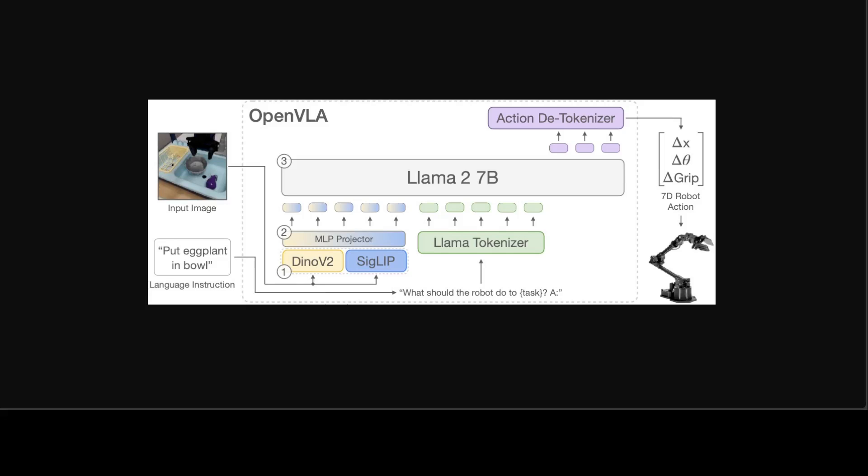The key weakness of learned policies for robotic manipulation is their inability to generalize beyond training data. While existing policies trained for individual skills or language instructions can extrapolate to new initial conditions such as object positions or lighting, they lack robustness to scene distractors or novel objects and struggle to execute unseen task instructions. Yet existing large language models for vision and language — such as CLIP, SigLIP, and LLaMA 2 — are capable of these types of generalization, coming from internet-scale pre-training datasets.